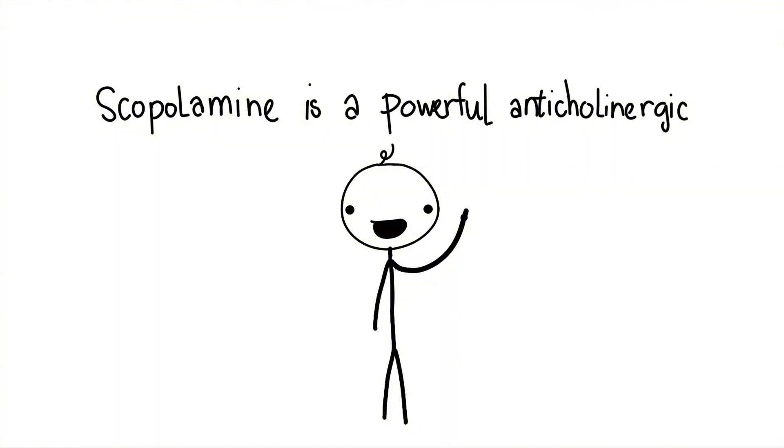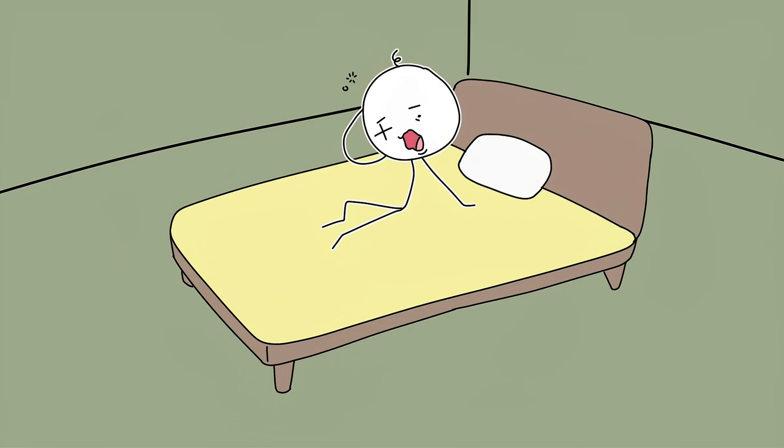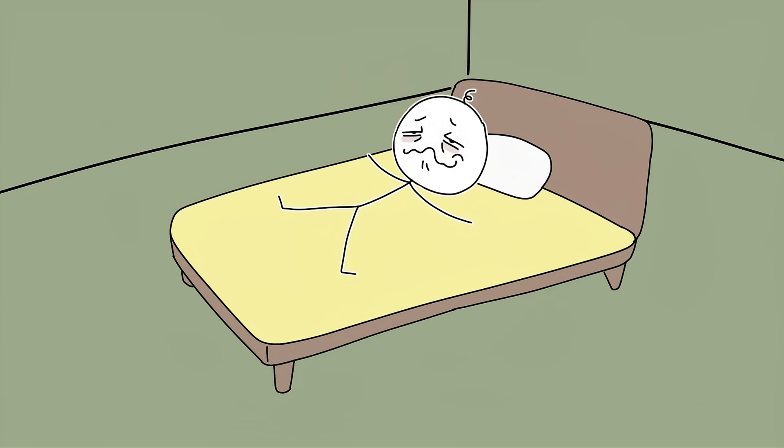Scopolamine is a powerful anticholinergic. At small medical doses, it causes drowsiness, dry mouth, lightheadedness. But with higher doses, or if swallowed or inhaled, it induces delirium. The victim becomes disoriented, paranoid, and most notably, completely stripped of self-control. They may still walk and talk, but in a zombie state, doing whatever they're told without fear, without resistance.